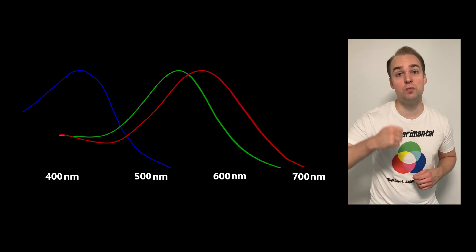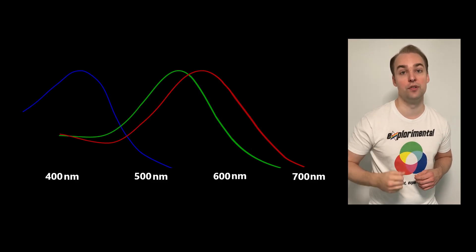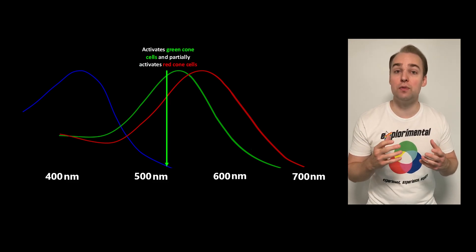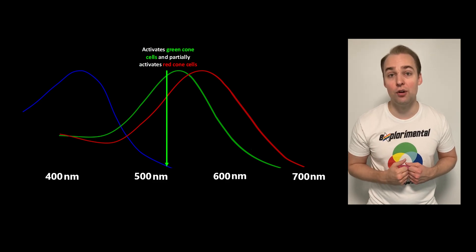Humans have three different types of cone cells. We call them red, green, and blue cone cells. And they have really wide absorbent spectra, so there is a lot of overlap between the wavelengths that will activate each cone cell.